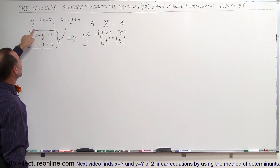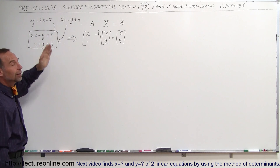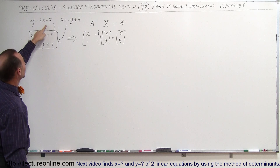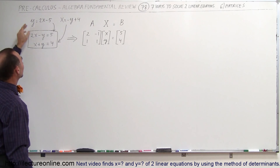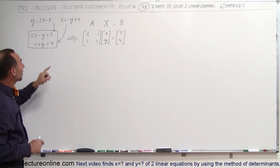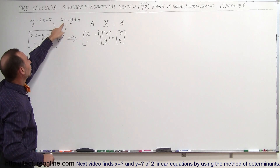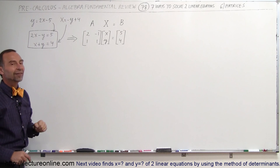If we write the equations with x and y on one side and the constant on the other side, the first equation becomes 2x minus y equals 5, and the second equation, moving y to the other side, gives us x plus y equals 4.